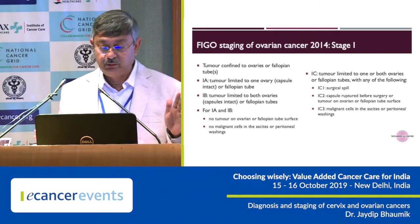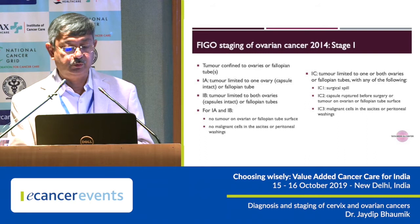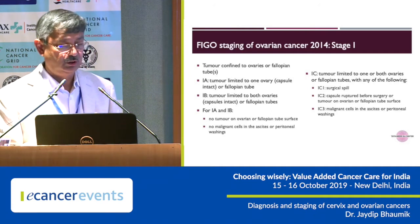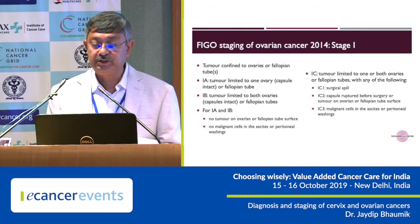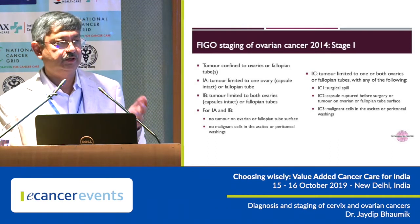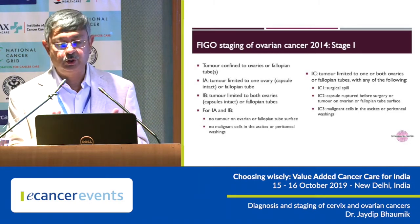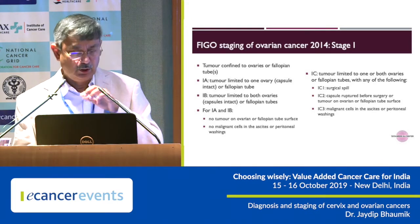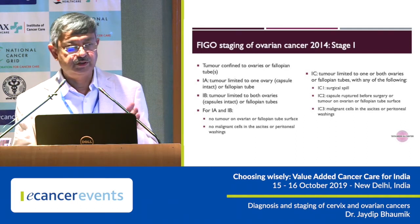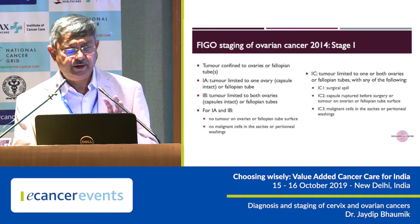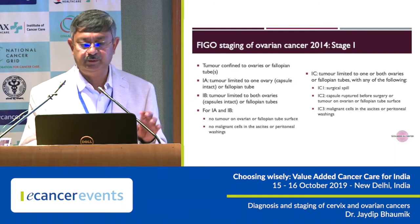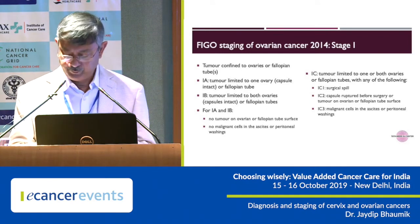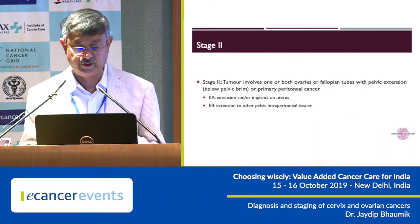Stage 1 is localized to the ovary. Stage 1A is limited to one ovary, Stage 1B to both ovaries. The capsule is intact, there is no ascites, and peritoneal washings are negative in both 1A and 1B. In Stage 1C: if there is a surgical spill during surgery, it becomes Stage 1C1. If the capsule is breached or ruptured before surgery it is Stage 1C2 — which is a very rare entity, because if there is tumor invasion of the capsule you usually already have cells in the peritoneal cavity. Stage 1C3 is if you find malignant cells in the ascitic fluid, a more common finding in early-stage ovarian cancers.